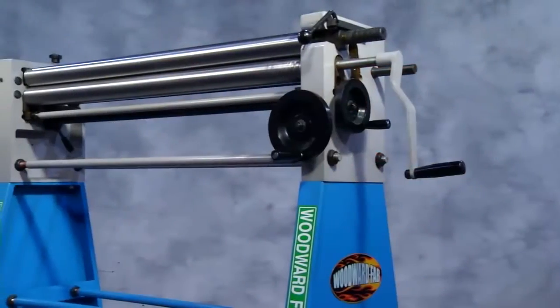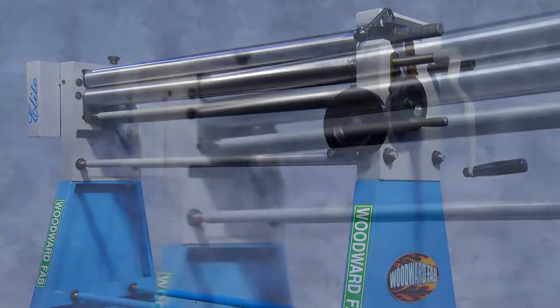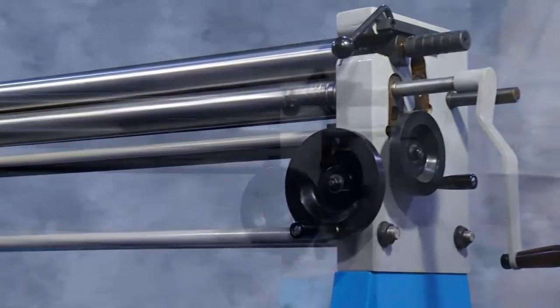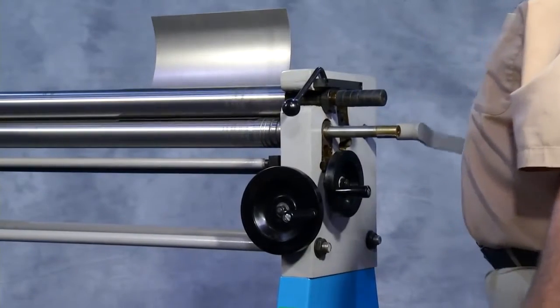The Elite Slip Roll 41 is our newest addition to the already wide range of slip rolls offered by Woodward Fab. This tool has a working capacity of 16-gauge mild steel and 20-gauge in stainless steel.